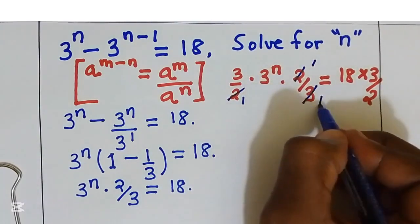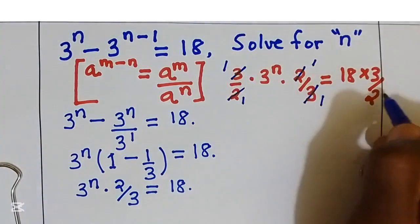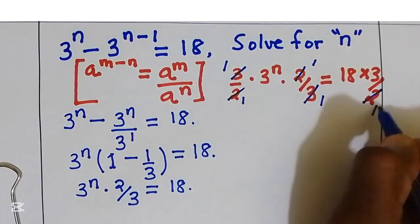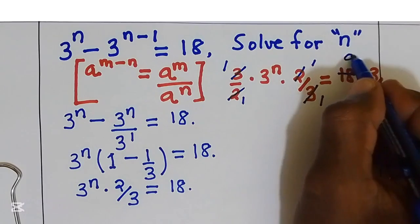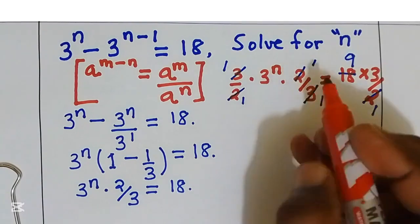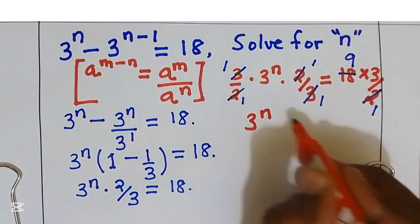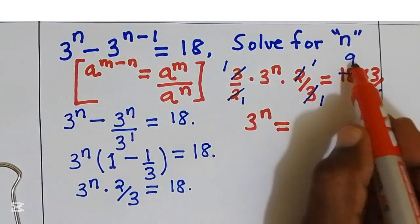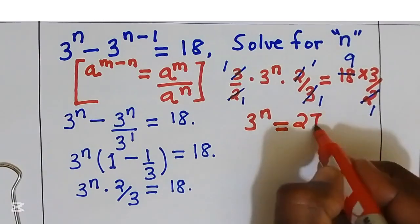By 2, I get 1, by 2 I'm going to get 9. On the left hand side we remain with 3 power n. This is equal to 9 multiplied by 3, it is 27.